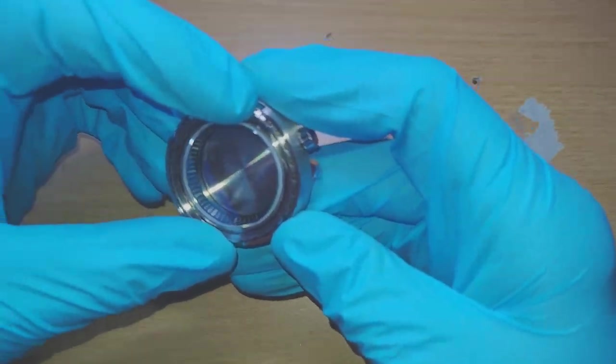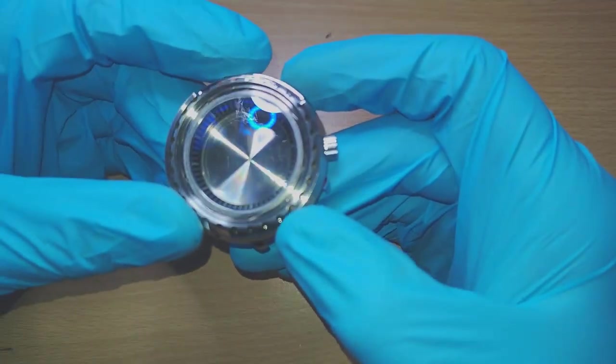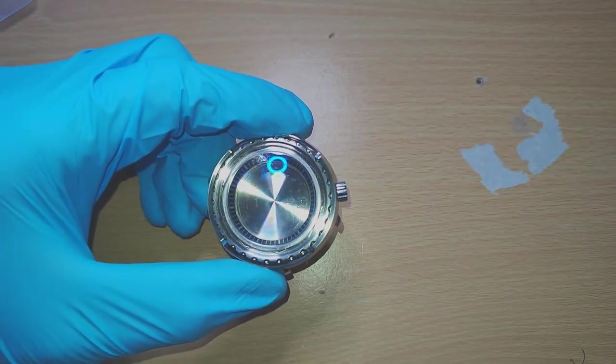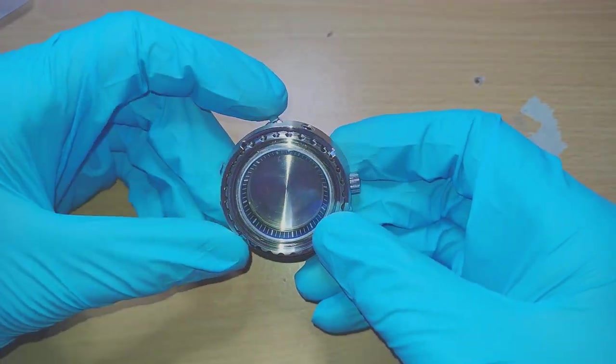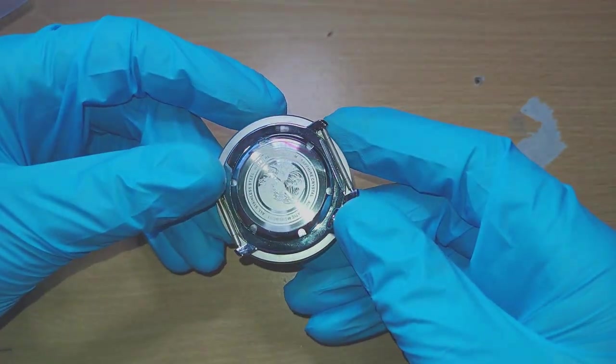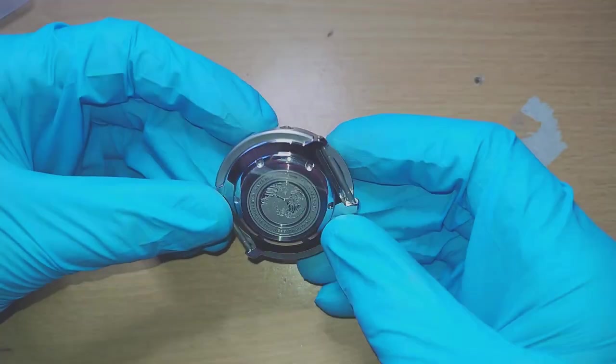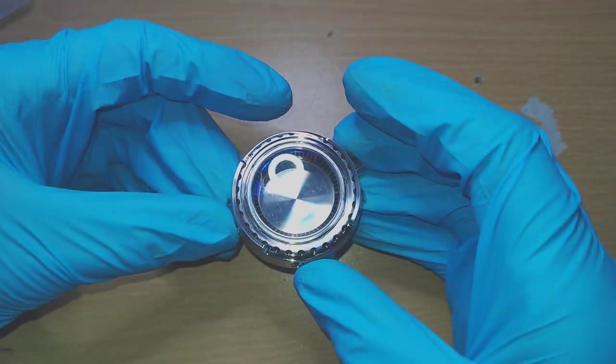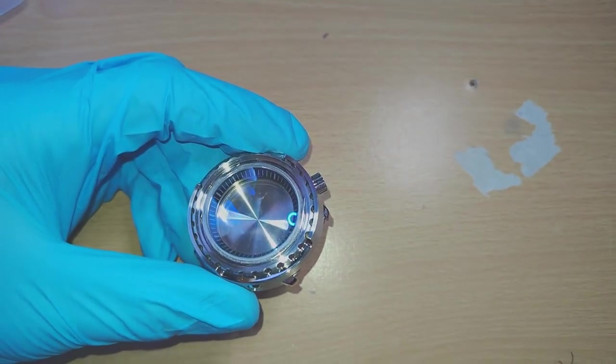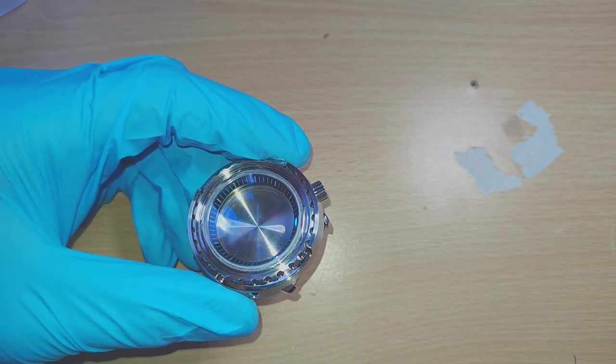The case turns really nicely, it's a really well-built case. I think it's made by Heimdallr, very good quality. The whole construction just feels really good. Even the crown has three O-rings on it. It's really nice, so I'm going to be using this case to build the Seiko Tuna.